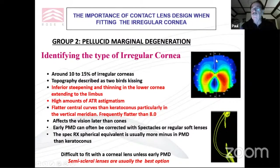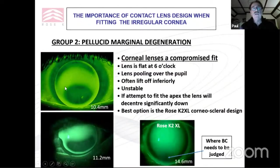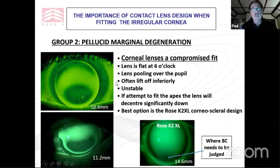Before we had semi-scleral lenses, we had to misfit with corneal lenses for pellucid. You can see how the lens impacts onto the lower cornea, often causing staining, with pooling superiorly. In pellucid, the tightest meridian is vertical, so the lens lifts off horizontally on the sides. With keratoconus, it's exactly the opposite — the lens often lifts off inferiorly. But if you go to a lens like XL, you can get a very nice alignment. With pellucid, we don't worry about what's happening centrally — we have to focus on the highest point on the cornea, which in pellucid is very inferior.